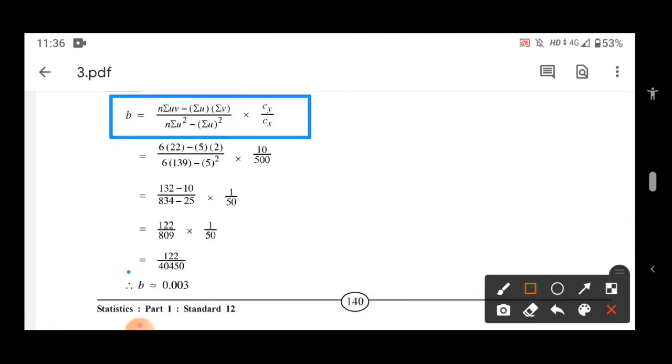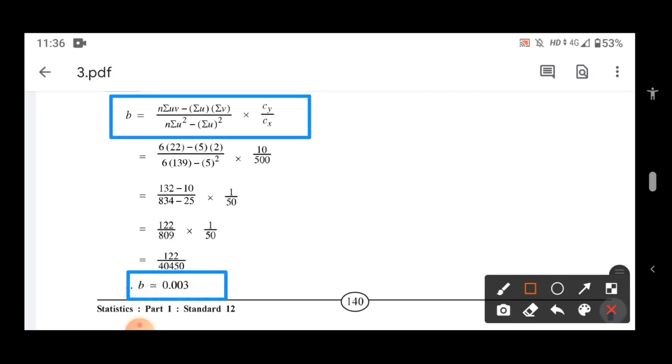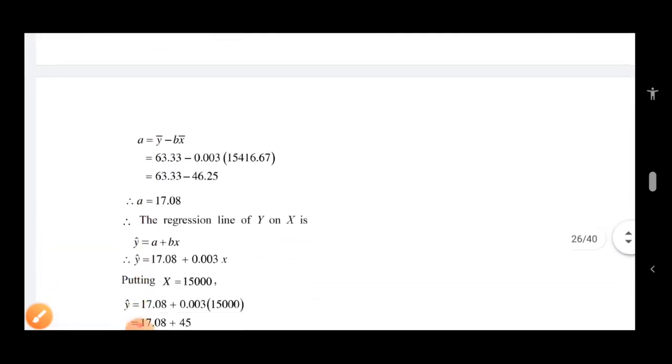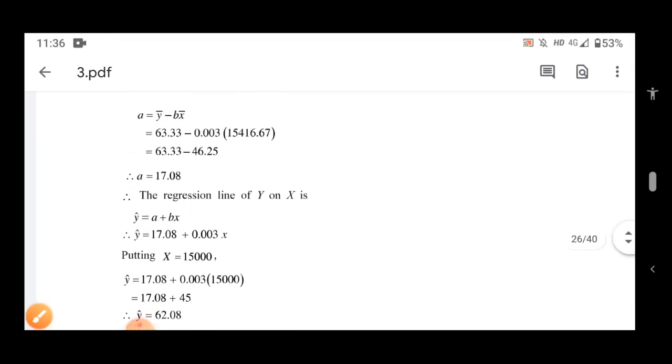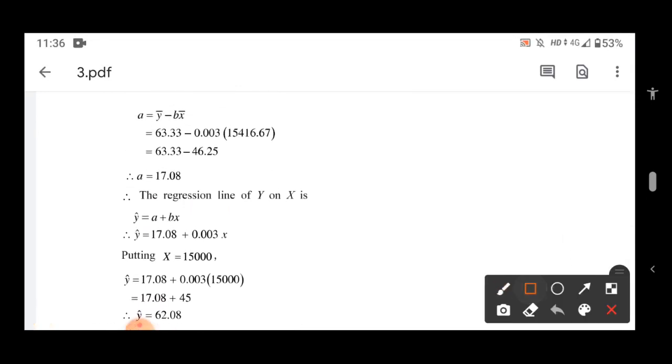So b, you got 0.003. After that, what do you have to find? You have to find a. a is equal to y-bar minus b times x-bar. So we got a. Clear?